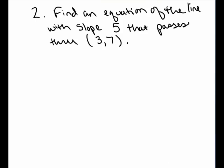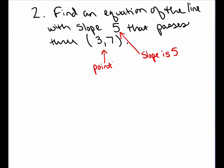In this problem, we want to find the equation of a line with slope 5 that passes through (3, 7). Again, I've been given the slope — we know the slope is 5. But this time, I've been given a point that is not the y-intercept. It is just a generic point on the line, over 3, up 7.